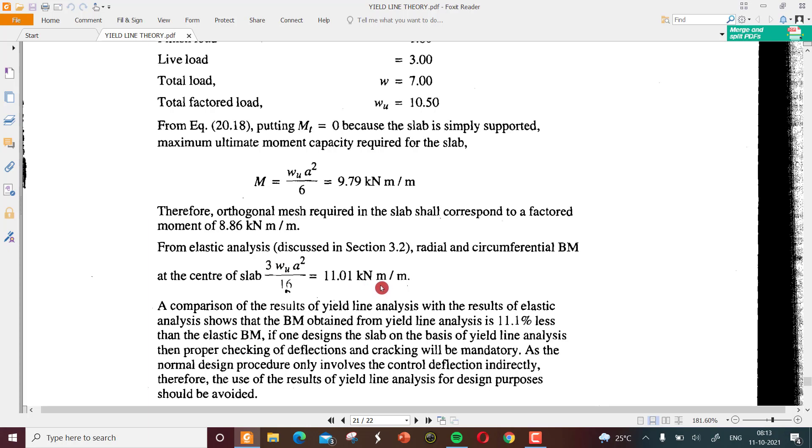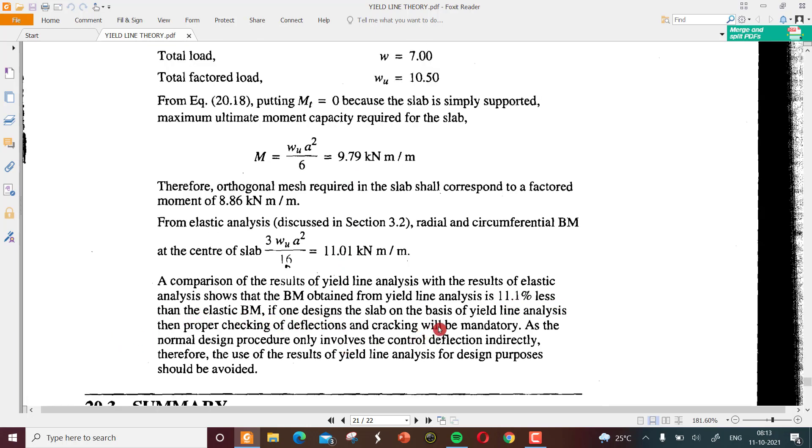A comparison of the results of yield line analysis with the results of elastic analysis shows that the bending moment obtained from yield line analysis is 11.1 percent less than the elastic bending moment. If you remember, we told in the initial class that the equilibrium method of solving the problem will give a lower bound value. The theoretical value is 11 and obtained value is 9.7. If we use the virtual work method, the value should be higher than 11.01 as it is upper bound. It's less than elastic bending moment.